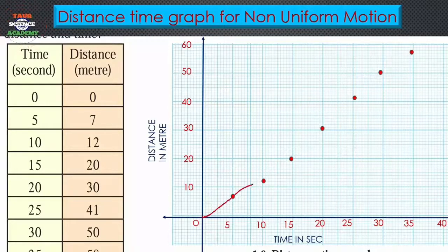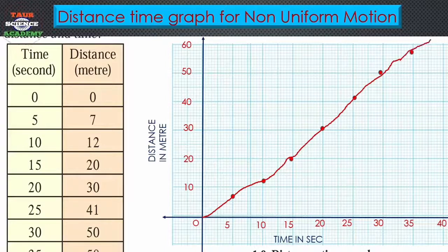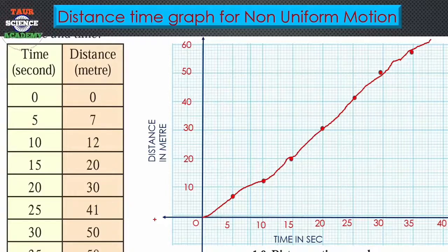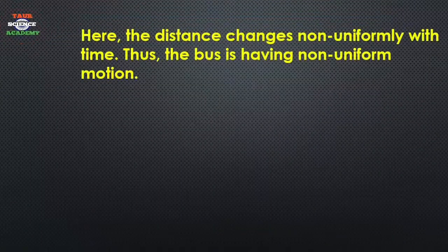This is the curve line passing through all the points. The Distance-Time Graph for Non-Uniform Motion is a curve line, not a straight line. The conclusion is that the distance changes non-uniformly — distance does not change uniformly over time, so the graph is a curve.